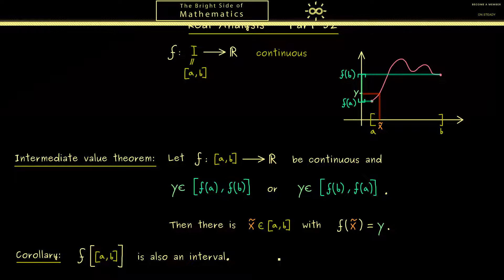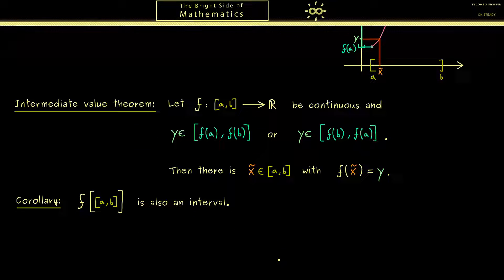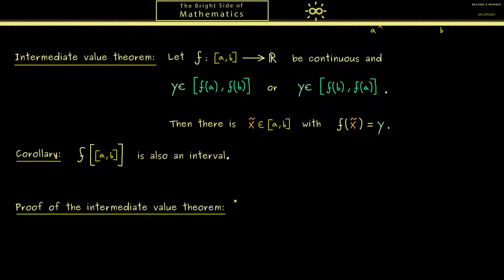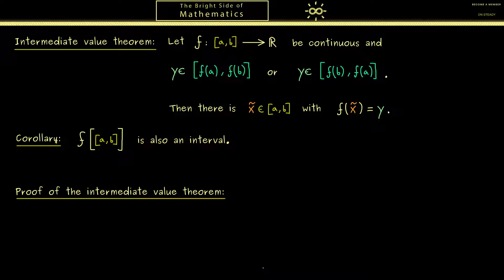Then I would say we can start with the proof of the intermediate value theorem. In fact as we will see the proof is not so complicated. The first step will be to normalize the problem in some sense. To understand this let's visualize the graph of a function again. This is similar as before where we have our y here.